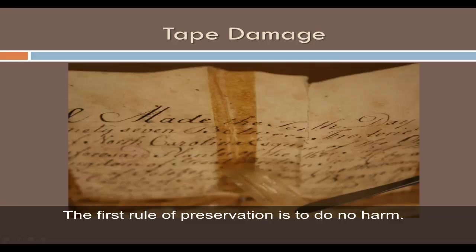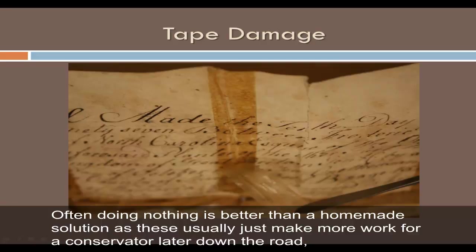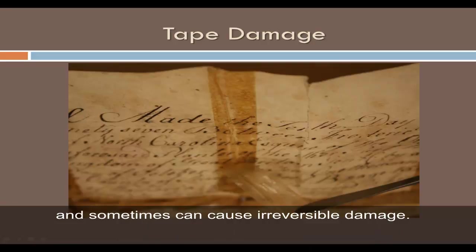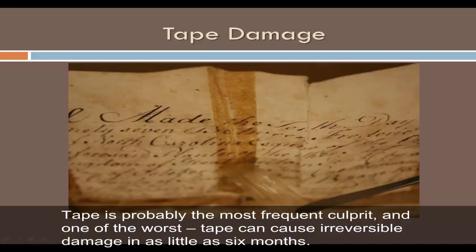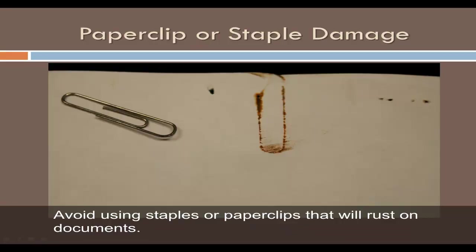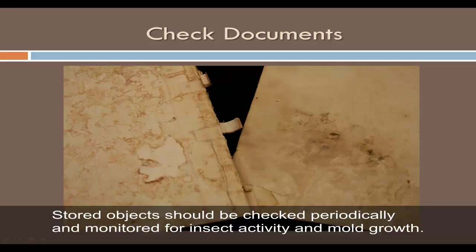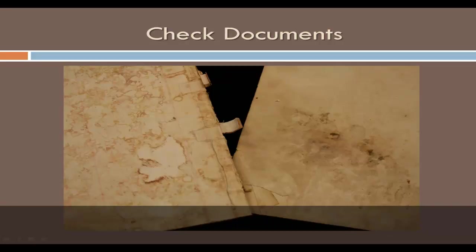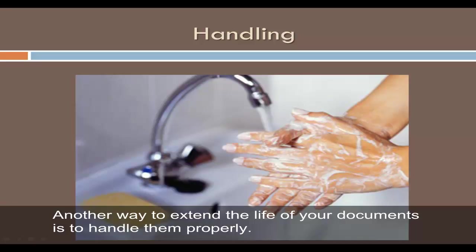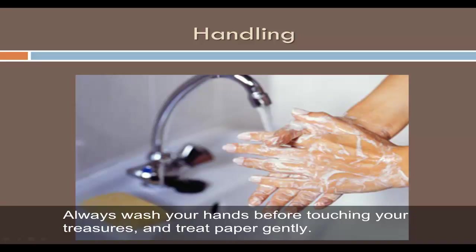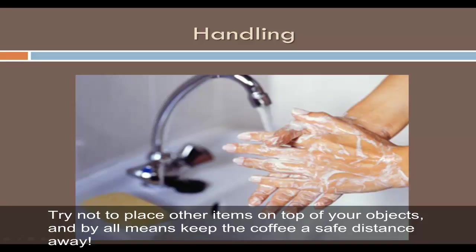The first rule of preservation is to do no harm. Often, doing nothing is better than a homemade solution, as these usually just make more work for a conservator later down the road and sometimes can cause irreversible damage. Tape is probably the most frequent culprit and one of the worst — it can cause irreversible damage in as little as six months. Avoid using staples or paper clips that will rust on documents. Stored objects should be checked periodically and monitored for insect activity and mold growth. Always wash your hands before touching your treasures and treat paper gently. Try not to place other items on top of your objects, and by all means keep coffee a safe distance away. These simple steps can avert a larger crisis.